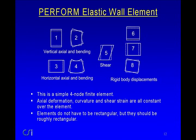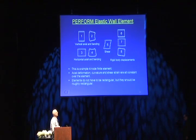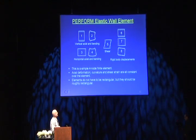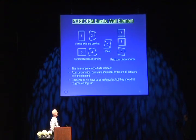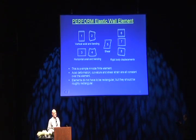PERFORM has a wall element, and we're looking here only at in-plane behavior. In the vertical direction it has an extensional mode and a bending mode; in the horizontal direction the same. It has a single shear mode and three rigid body modes: vertical, horizontal, and rotation. It's a four-node finite element with two displacements per node — a total of eight degrees of freedom. The axial strain is constant, the curvature is constant, and the shear strain is constant — these are all constant deformation elements, so rather low-order elements. Elements don't have to be rectangular, but it's a good idea to keep them roughly rectangular.